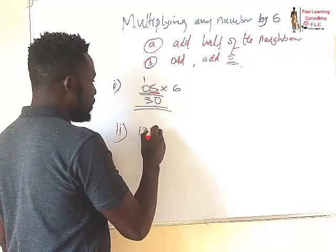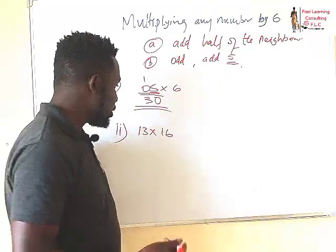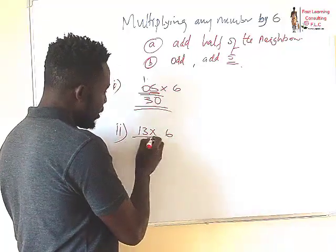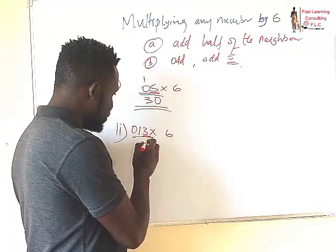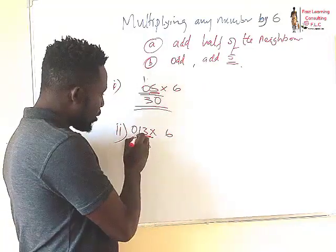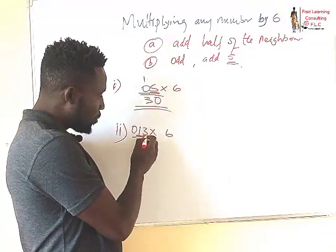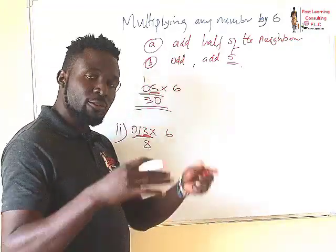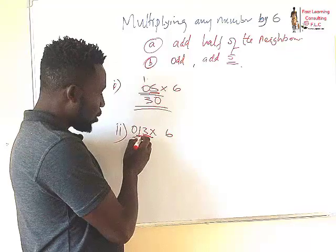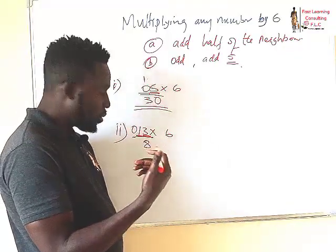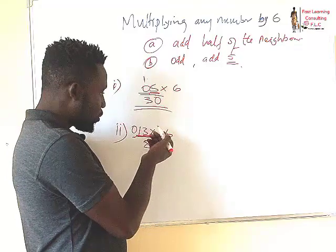Now let's do example two. What is 13 multiplied by 6? We add a 0 here. 3 is an odd number, so we add 5, giving us 8. 1 is an odd number, so we have 6 plus half of the neighbor — half of 3 is 1.5, we round it down to 1. Since 1 is an odd number, we also add 5. So this is 6 plus half of the neighbor: 6 plus 1 gives us 7.